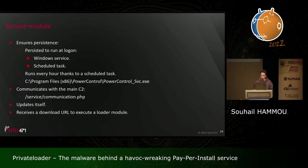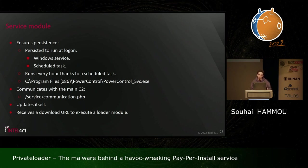The service module ensures persistence at logon, either using a Windows service or a scheduled task, determined by a Boolean value hard-coded inside the module. It also sets up a scheduled task that executes every hour, with the persistent location being the Program Files directory. It communicates with the main C2 using the service_communication.php endpoint, updates itself, and receives a download URL to execute another loader module to keep Private Loader always running.